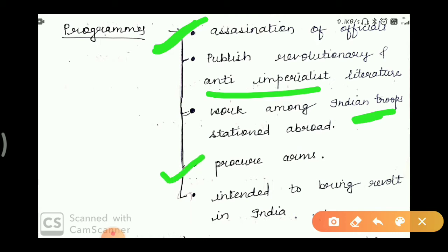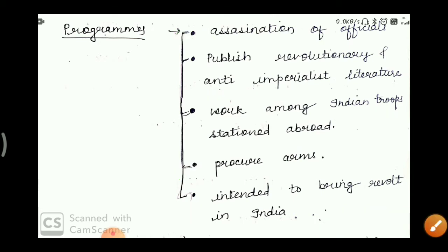They also aimed to procure arms. Their main idea and intention behind all revolutionary activities was to bring about a revolt in India against the imperialist rulers.